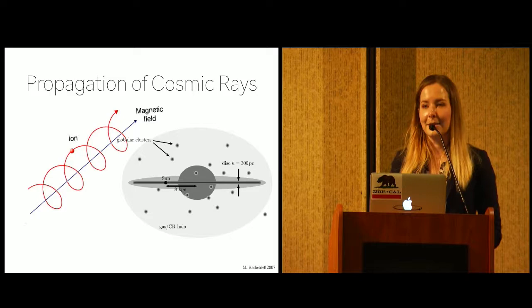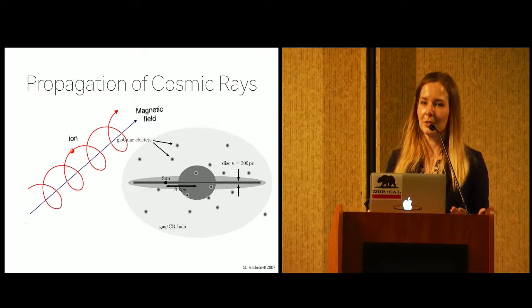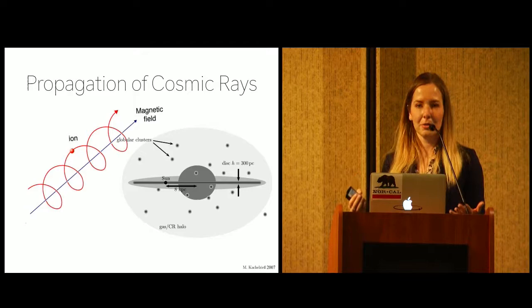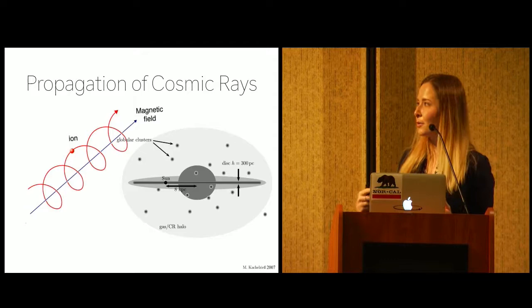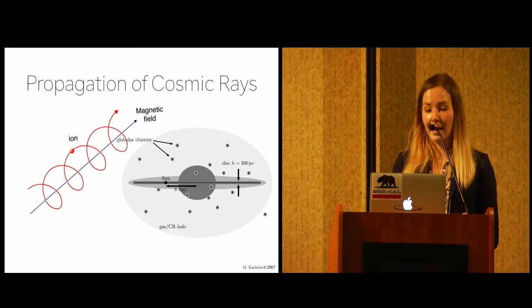And as it turns out, that scattering mechanism is the magnetic field. So because cosmic rays are charged particles, the moment they encounter a magnetic field, they experience a force tangential to the direction of motion, and so they become kind of bound to that magnetic field line and they stream along it. And galaxies have pretty important magnetic fields.